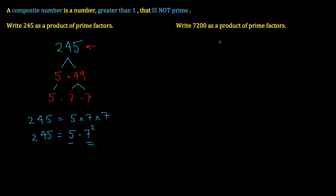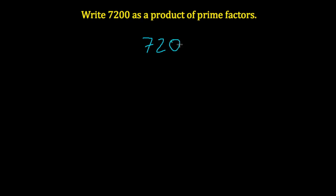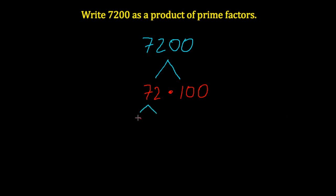Let's try a larger one: write 7,200 as a product of prime factors. I'll start with 7,200 and split it into two convenient numbers. I'm thinking 7,200 is 72 multiplied by 100 — that's most convenient. Clearly, neither 72 nor 100 are prime; they're both even and both composite. So we can break those further down. I'll break 72 into 9 times 8, and 100 into 10 times 10. So 7,200 can be written as 9 times 8 times 10 times 10, but we are not yet dealing with prime factors.